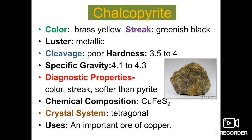The streak of chalcopyrite is softer than pyrite. The chemical composition is CuFeS2. Crystal system is tetragonal. Its primary use is as an important ore of copper — chalcopyrite is the main ore from which copper is mined.